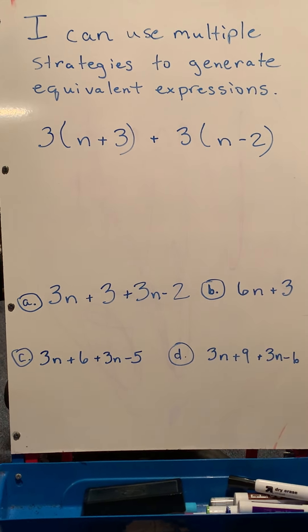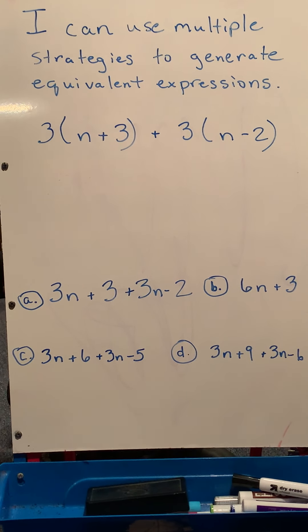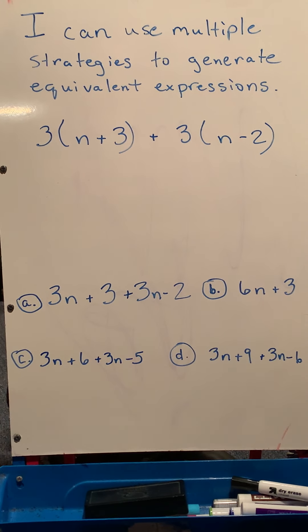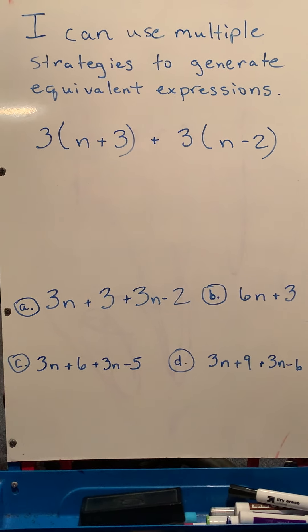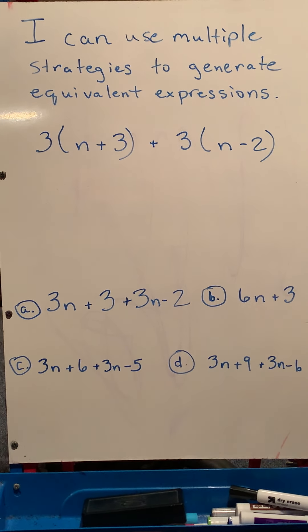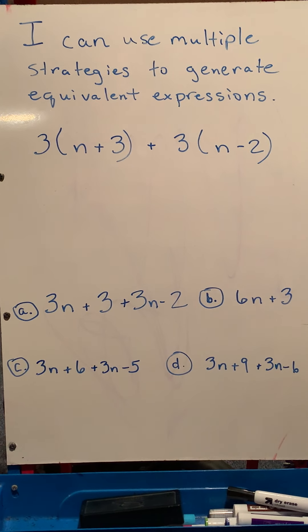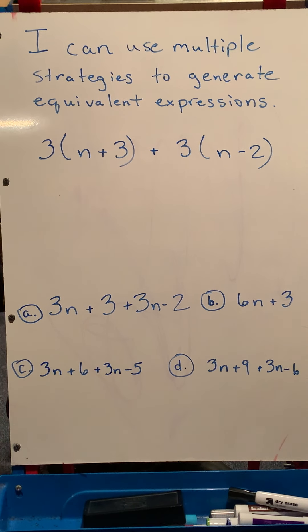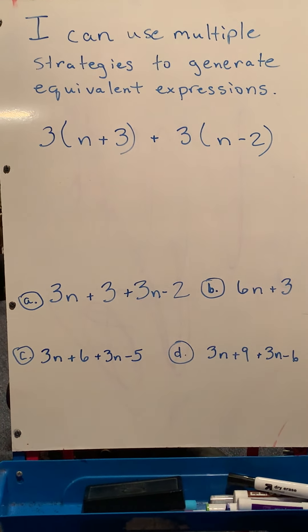We're going to look at the distributive property again and combining like terms as one strategy. And we'll also talk about substitution as another example. It's not as time efficient, but it is another way you can try to find equivalent expressions or expressions that have the same value as the one we start with.